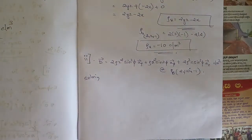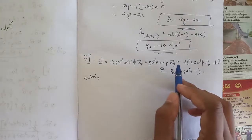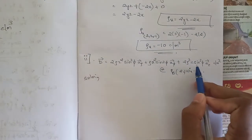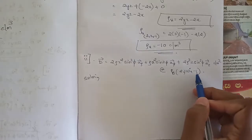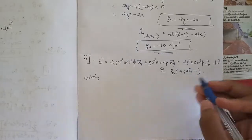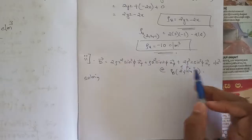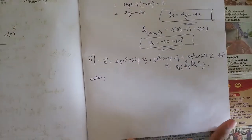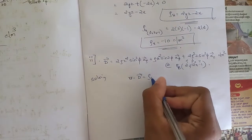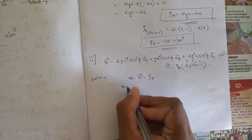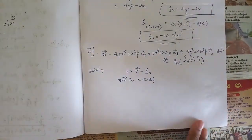Now let's go to the second sub-question. Here they have given D as: 2ρz² sin²φ a_ρ + ρz² sin(2φ) a_φ + 2ρ²z sin²φ a_z coulombs per meter square, at the point (2, 110°, −1). Since they have given values for ρ, φ, z, we know this is the cylindrical coordinate system. We need to find rho_v by expanding del dot D in cylindrical coordinates.